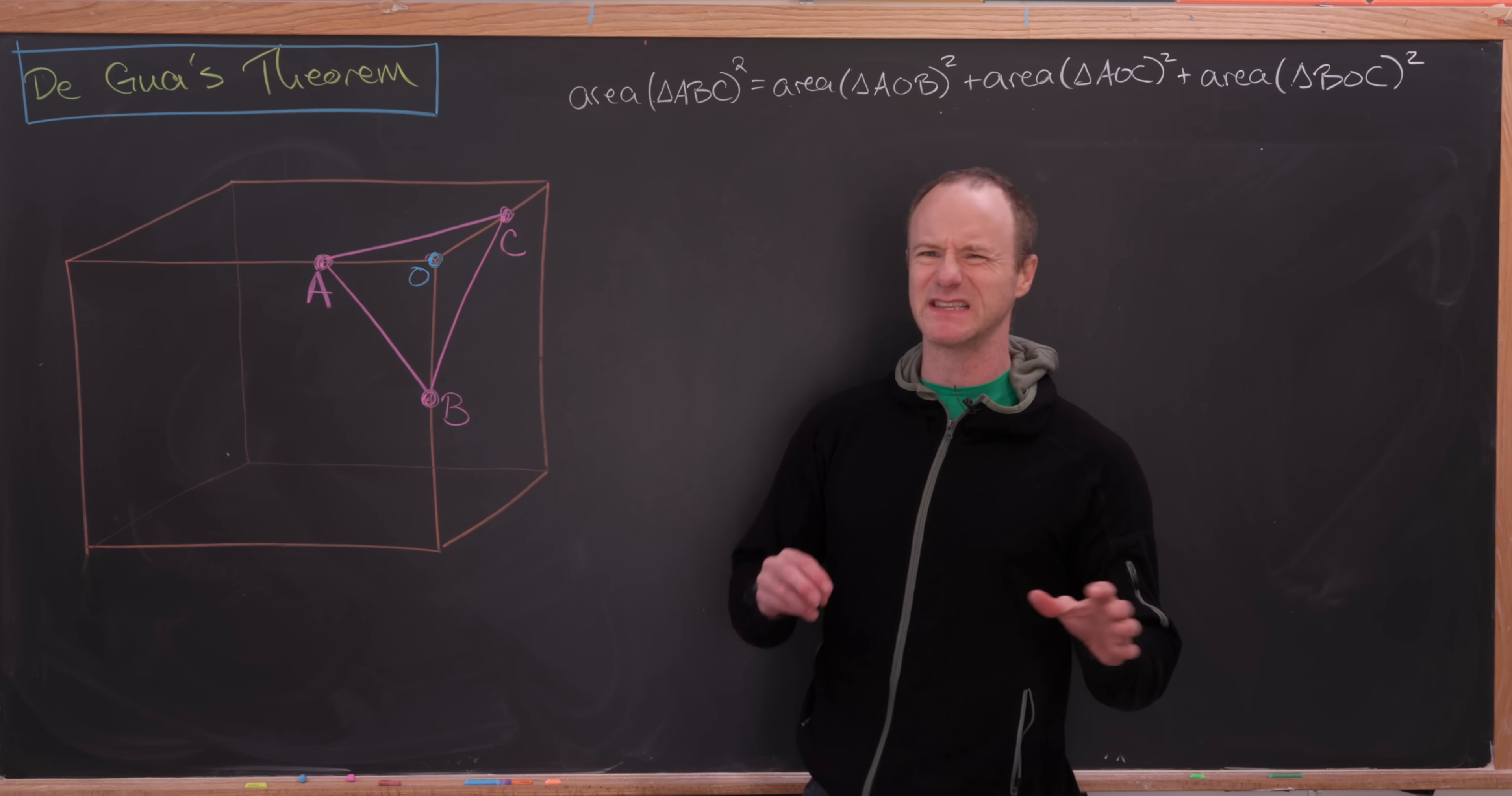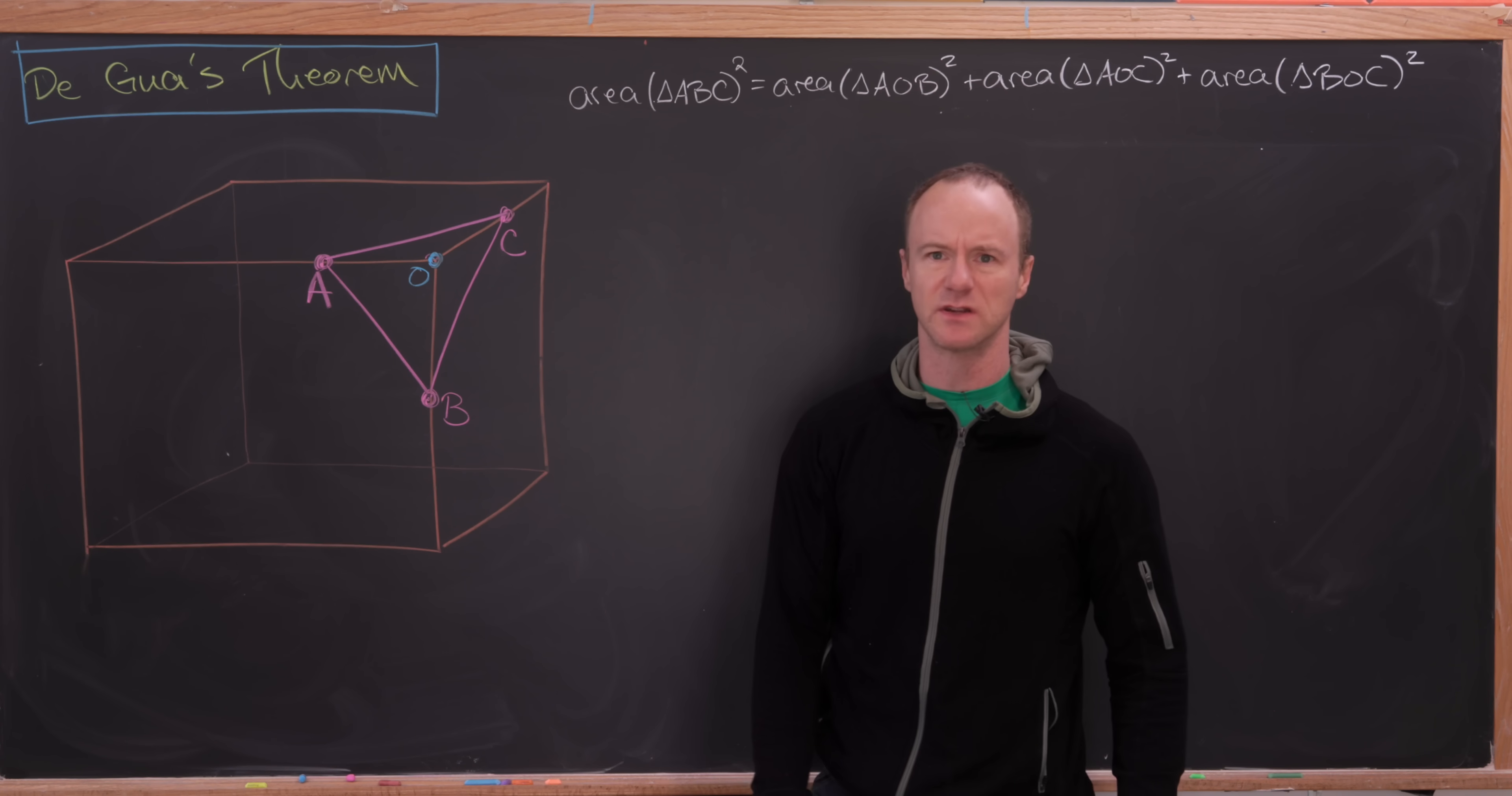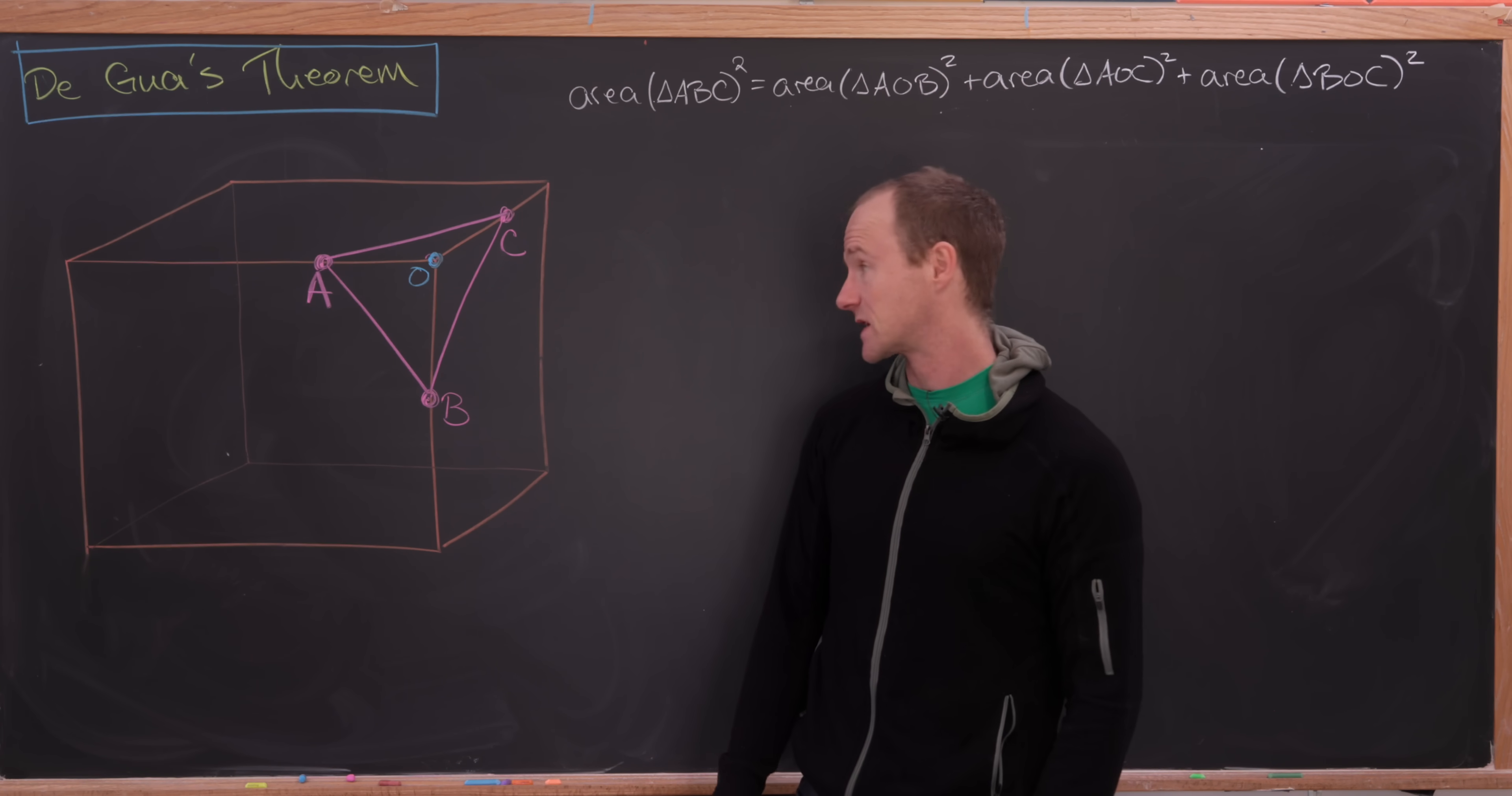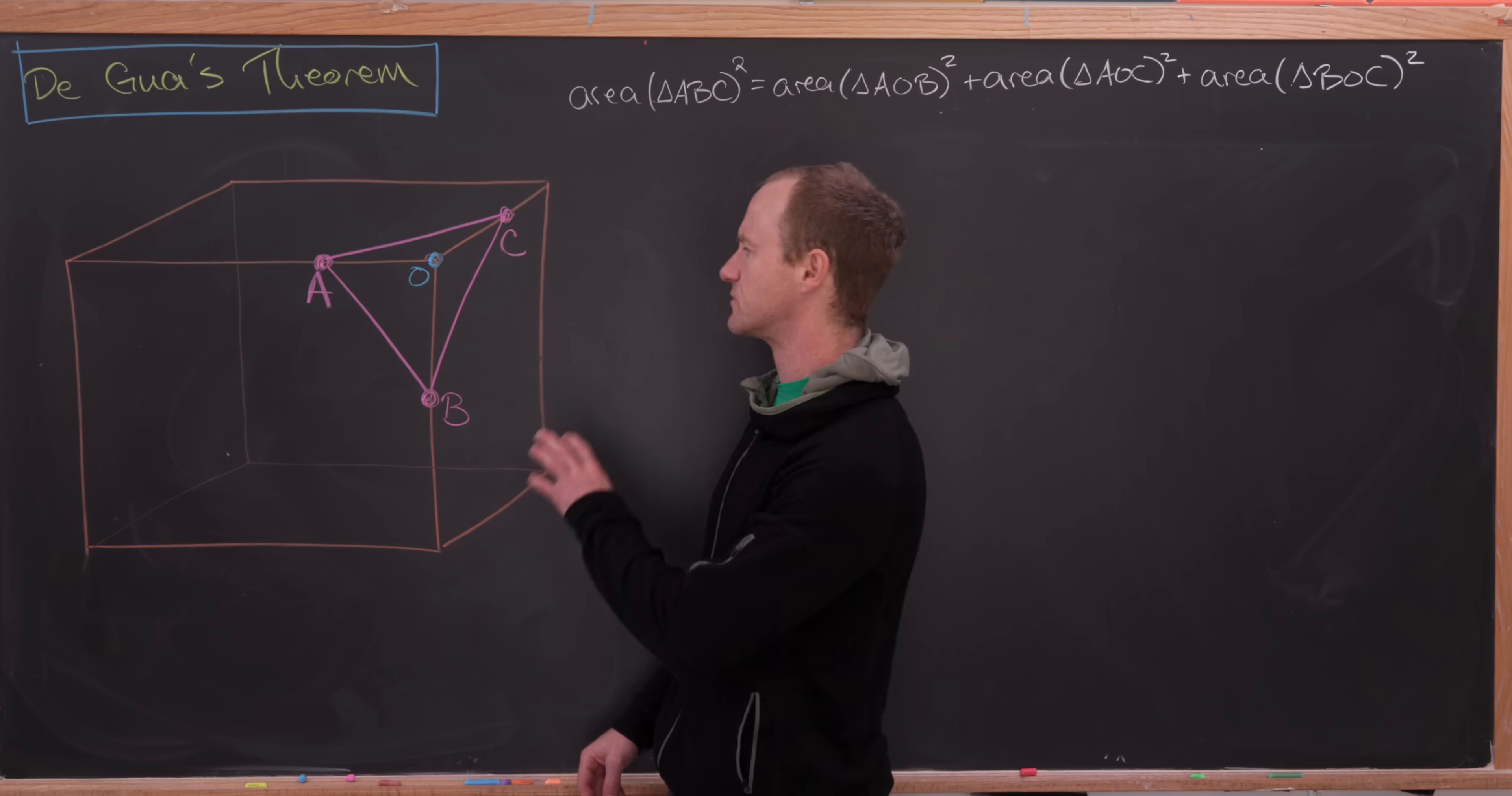So let's maybe see the setup here. We've got a right-angled, not a cube, but like a rectangular box. And then in one of the corners we look at some triangles.